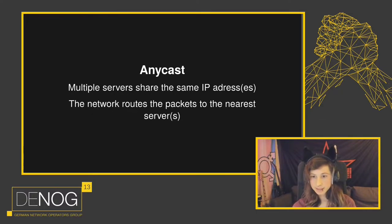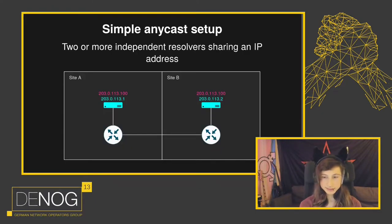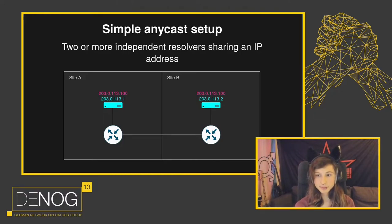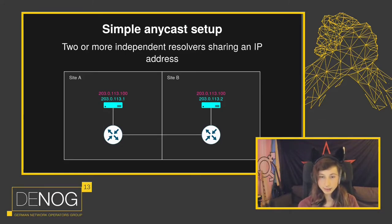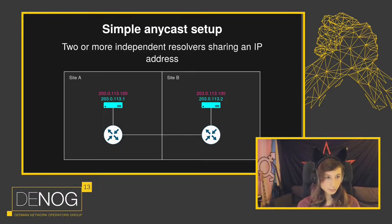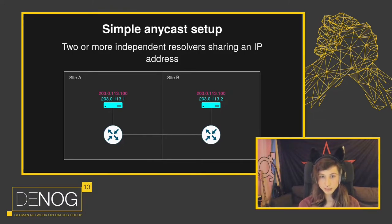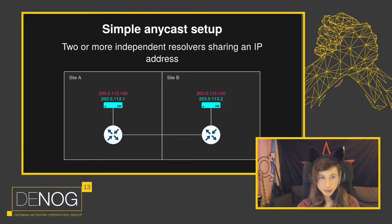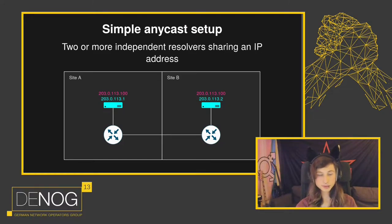Let's have a look at a simple Anycast setup to understand how this works. This is maybe the most simple setup you can imagine: two servers in two sites, connected to different routers. As you can see, they have a unique IP address shown in cyan, and they have a shared IP address shown in pink. In a normal setup, you would probably assign your DNS servers multiple Anycast addresses because customers are used to talking to multiple IP addresses, but there's just one here for simplicity.